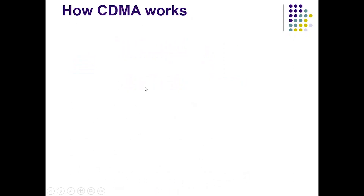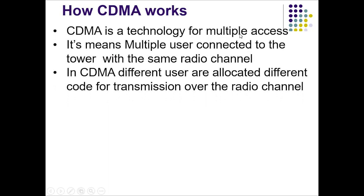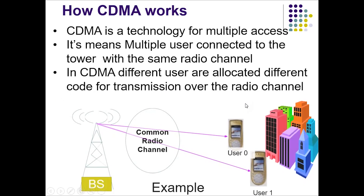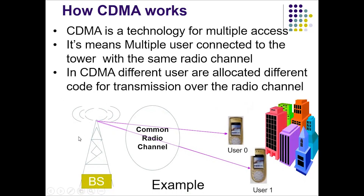Now we see how CDMA works. CDMA is a technology for multiple access, meaning multiple users connect to the tower with the same radio channel. In CDMA, different users are allocated different codes for transmission over the radio channel. In the graphical representation we see some users connected to the tower with a common radio channel. In the next slide I discuss how two users are connected and communicate with each other.